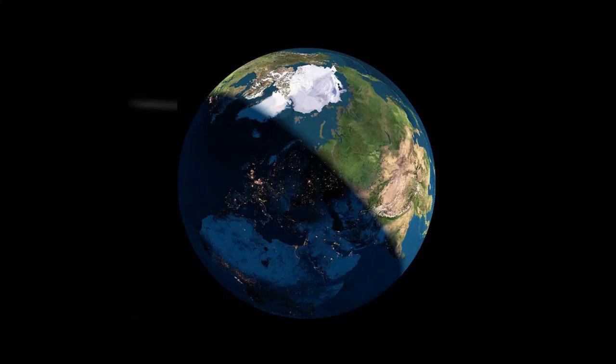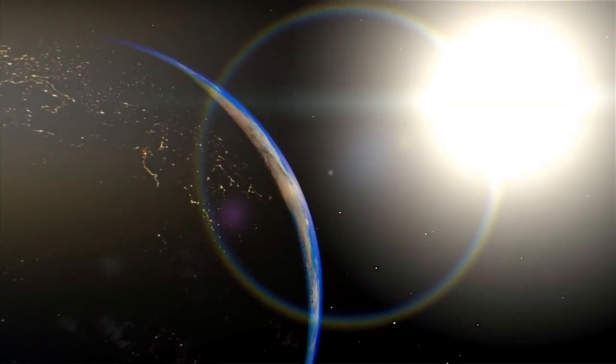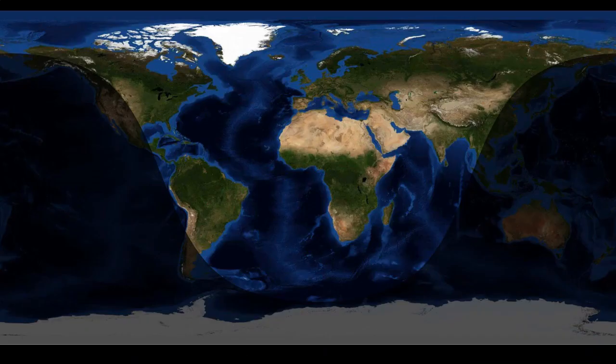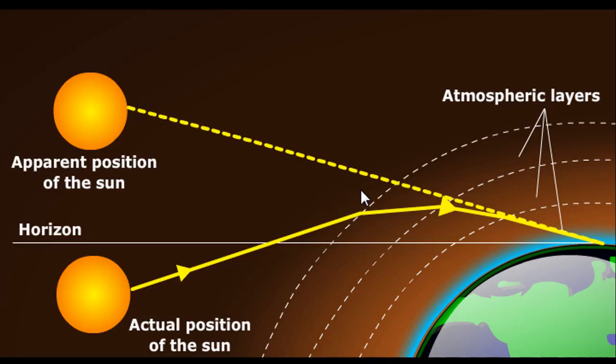It is a common thought that when half of the Earth is covered in darkness, the other half is covered in sunlight, but it is actually not true. Because of the bending of the sunlight, the land covered by sunlight has greater area than the land covered by darkness.